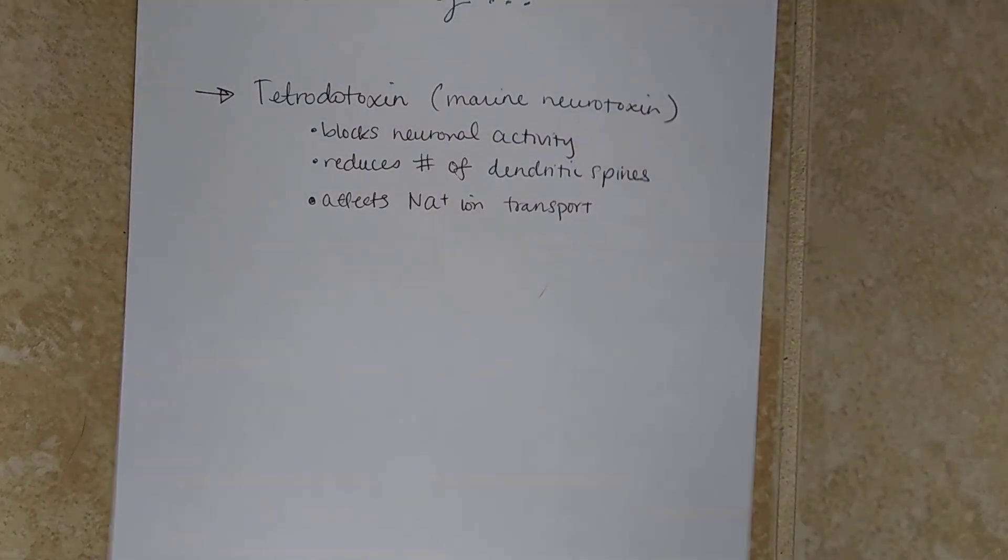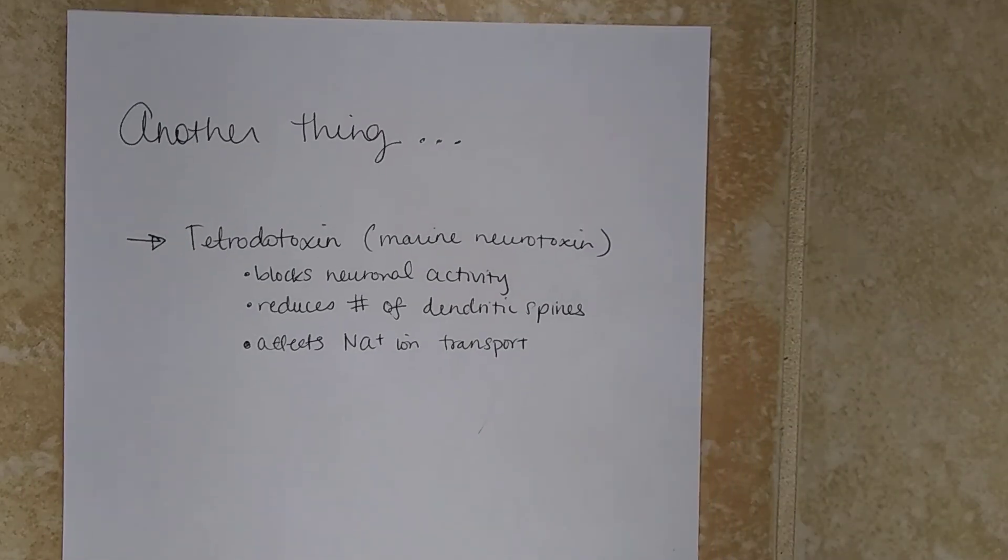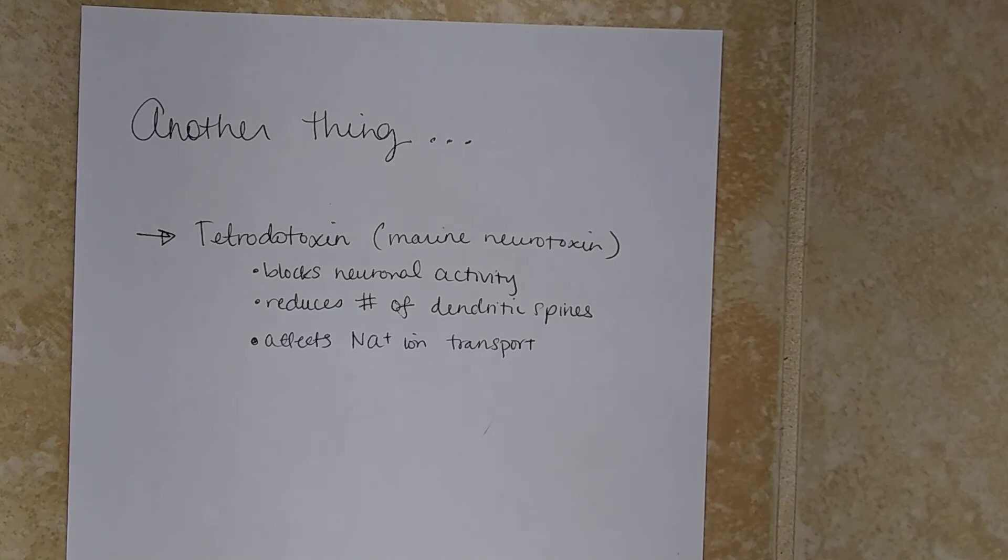So one thing that I did find is tetrodotoxin, and this doesn't have anything to do with the article. This is just something separate that I found. It's a marine neurotoxin, and it actually blocks the neuronal activity by reducing the number of dendritic spines. So, as mentioned before, the dendritic spines allows for connections with other neurons, and it does this by the interaction of other molecules between these synapses.